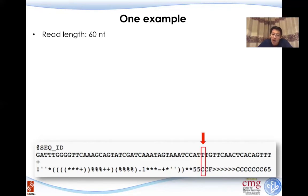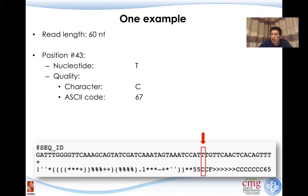So now let's come into one specific example here. In this particular one, this is probably position number 43. And we know that from the second line, the character here of the nucleotide is a T. And the quality character is a C. So if we go back to the previous slide, if we check the PHRED score, the ASCII code for C is 67.